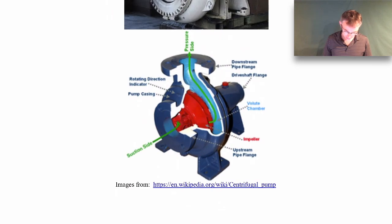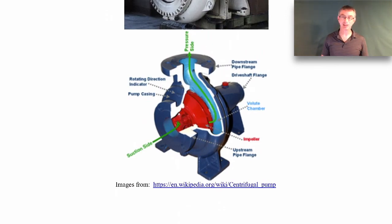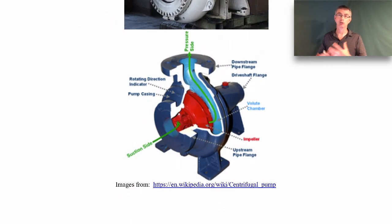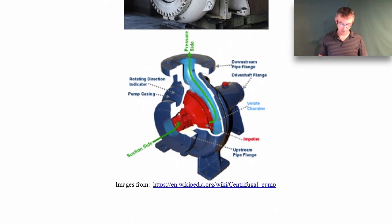This is called a closed impeller because there's a shroud on the front and the back, so the fluid comes out through a gap in the middle. It gets thrown out to the side and collects in the volute — the blue chamber. The high-speed kinetic energy of the water being thrown outward gets converted into pressure as it slows. The area also increases through the volute, and from Bernoulli's equation that produces additional pressure, so you end up with a high pressure going out.